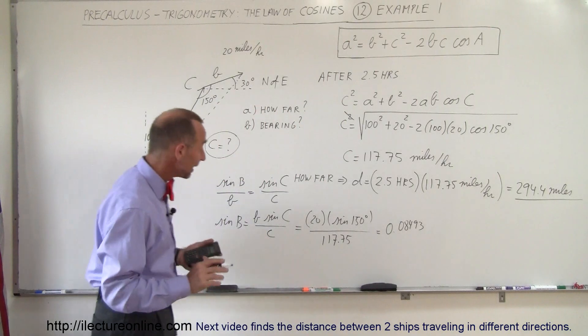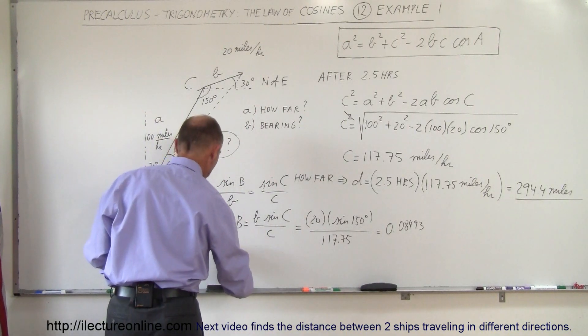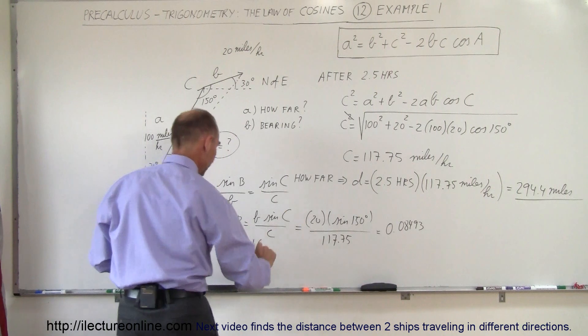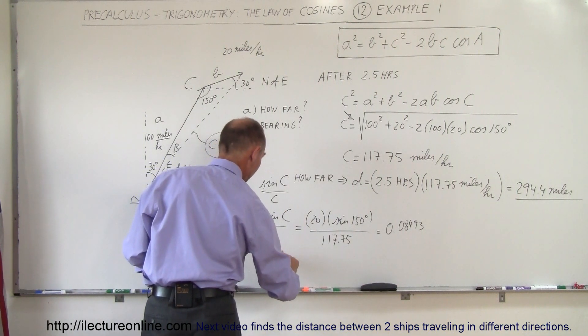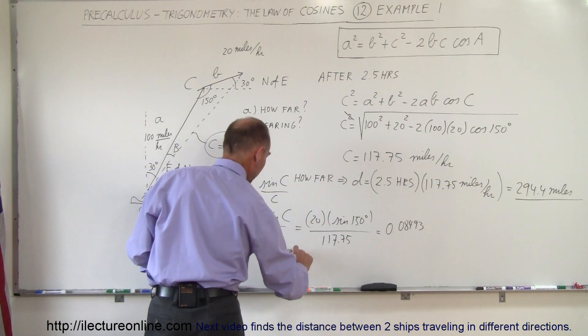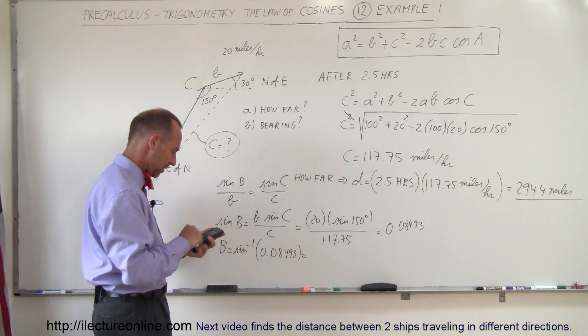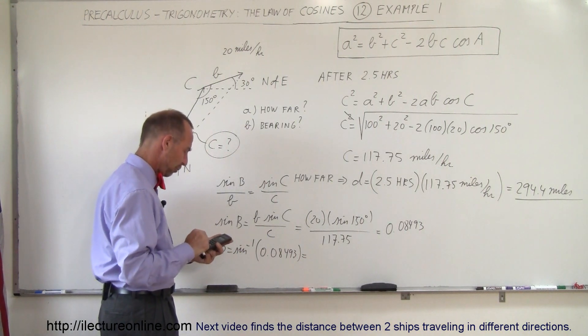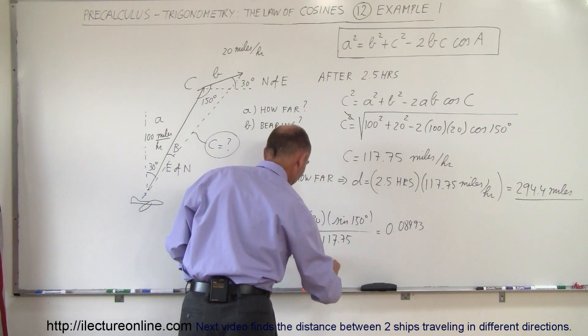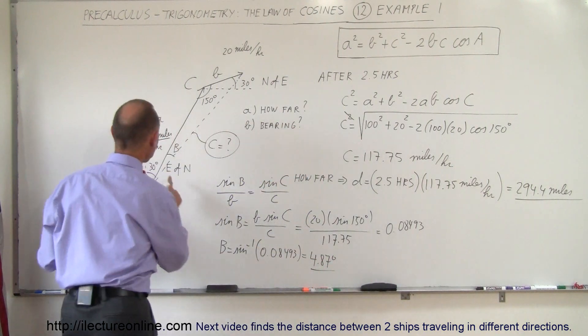Okay, now we take the inverse sine of that, so B equals the inverse sine of that number, which is 0.08493. So take the inverse sine of that, and we get 4.87 degrees. So that's angle B.